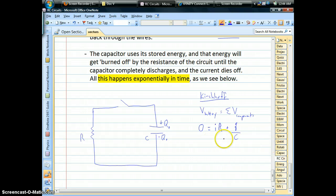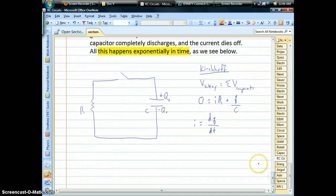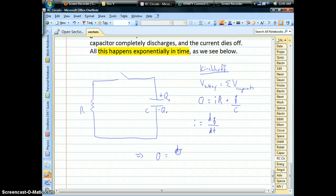We want time, so we make use of our definition of what current is in the first place. It's the rate of change of charge moving through the wires. So when you substitute that, this is where you get your differential equation, and where we basically have to start doing some math.